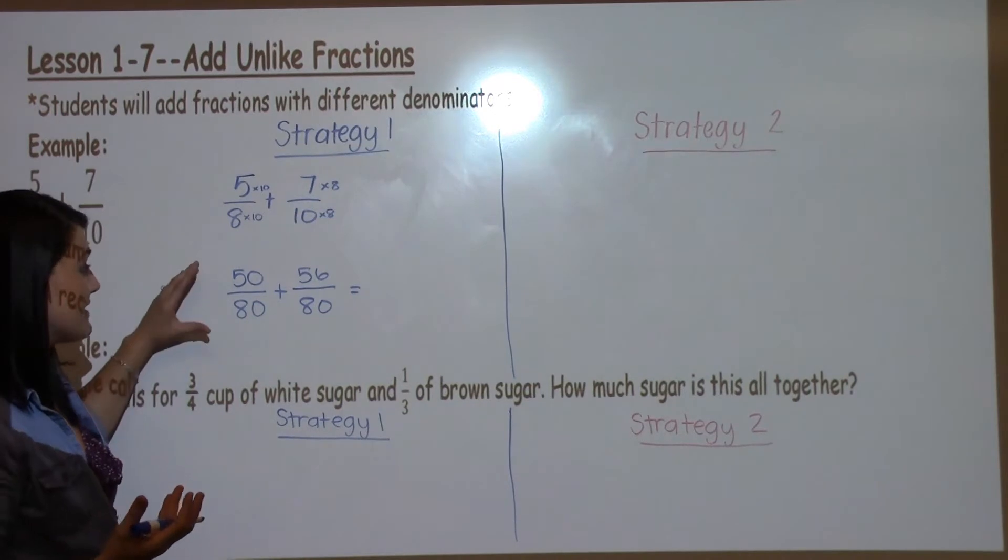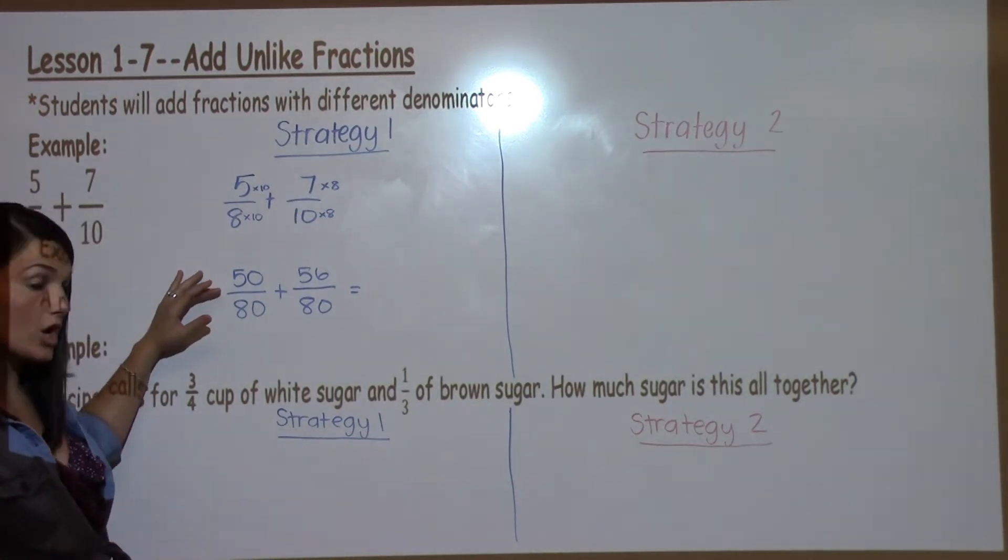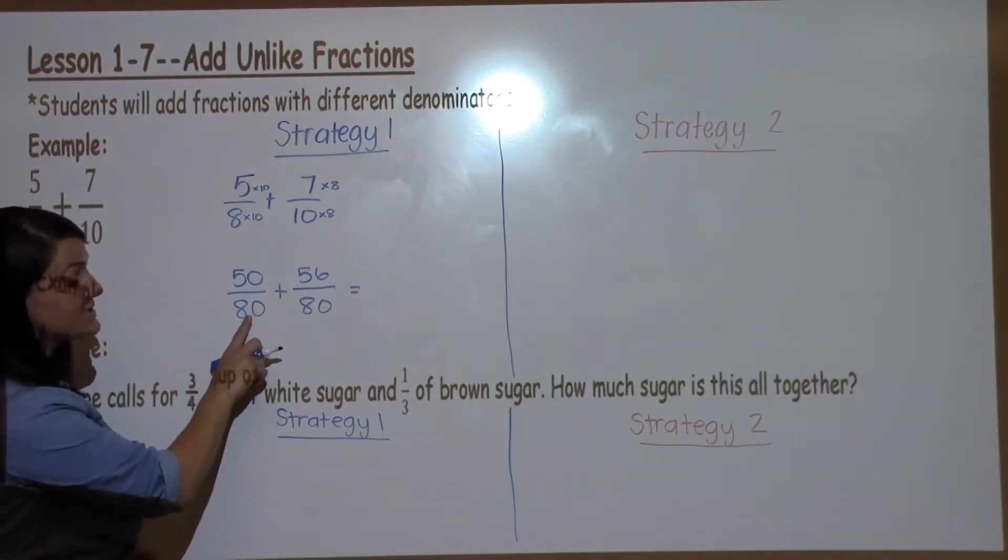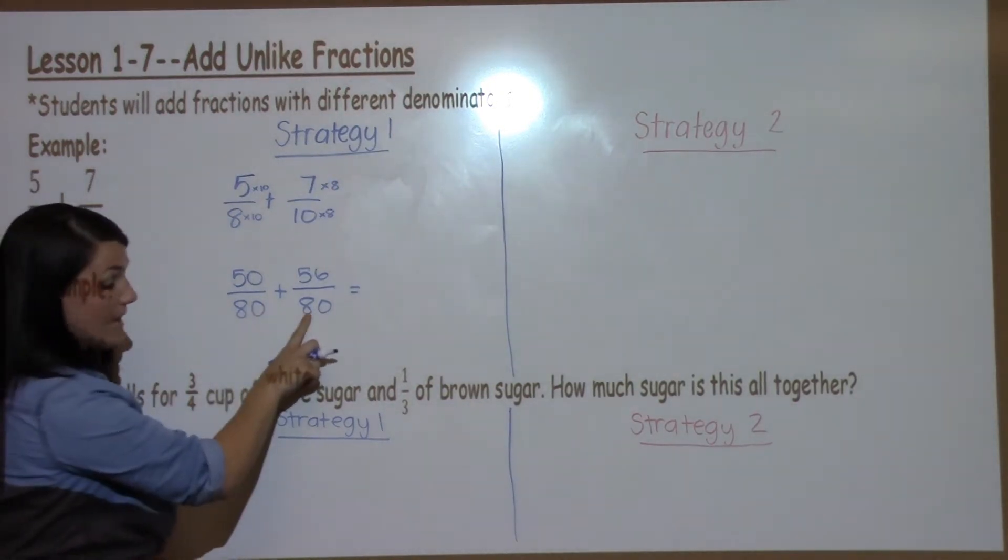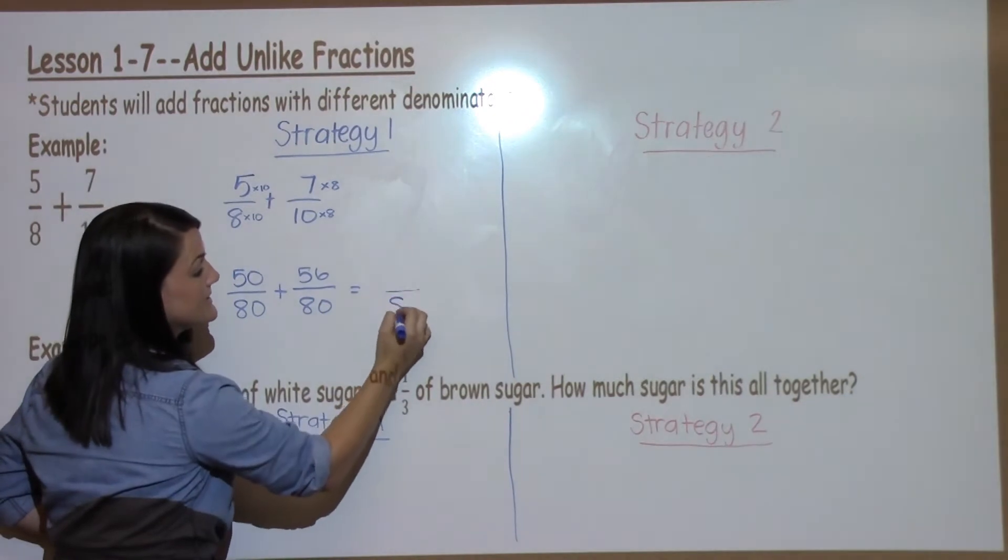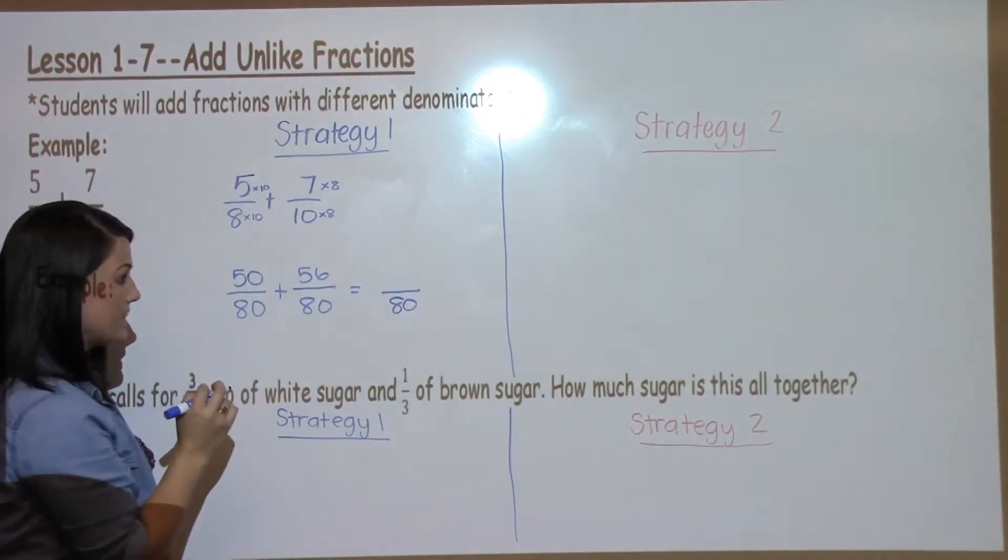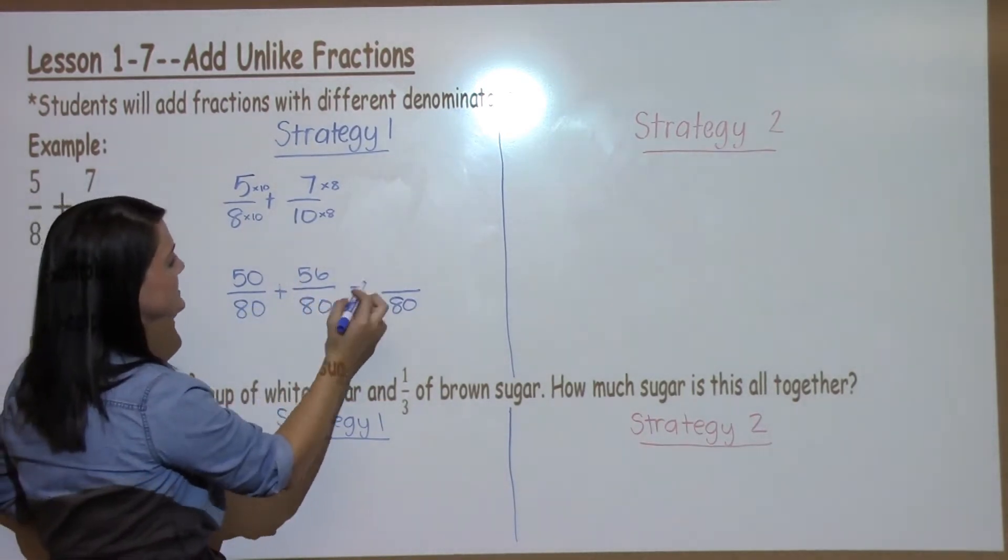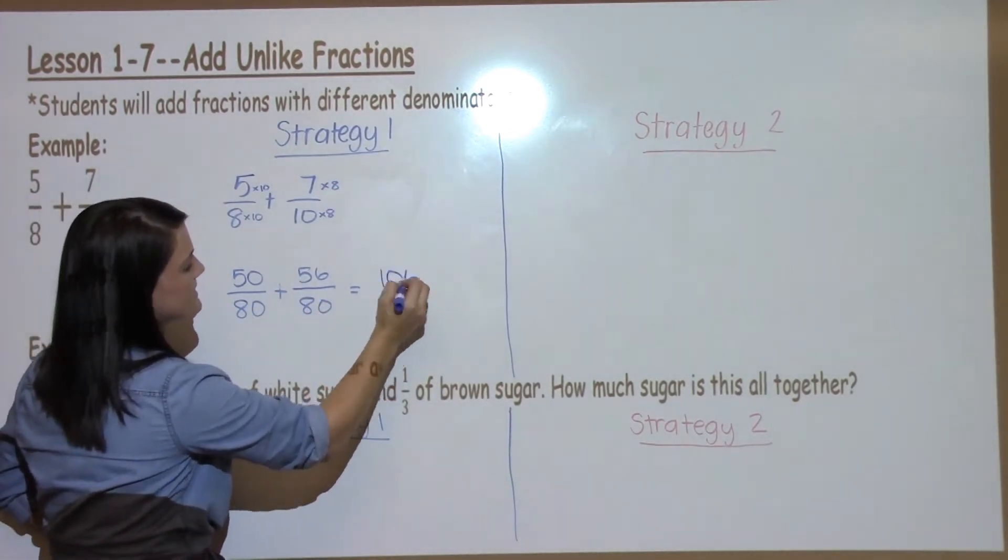This strategy does have us working with numbers that are a bit larger, but it is one strategy that students can use. I've now made my denominators the same. So once I make them the same, they stay the same when I'm adding or subtracting. And then I just get to add my numerators or the tops. 50 plus 56 is 106.